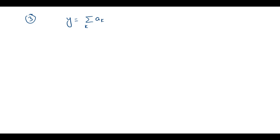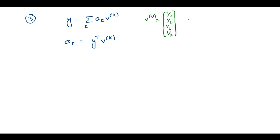So here we have the four vectors V0, V1, V2, V3. The given V0 vector is (1/2, 1/2, 1/2, 1/2).